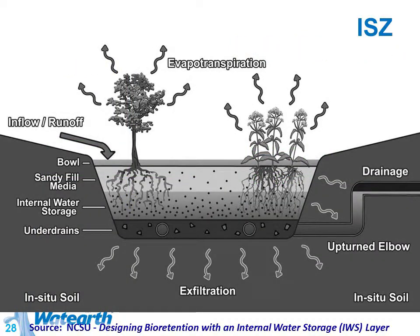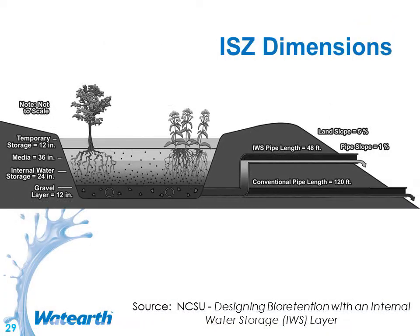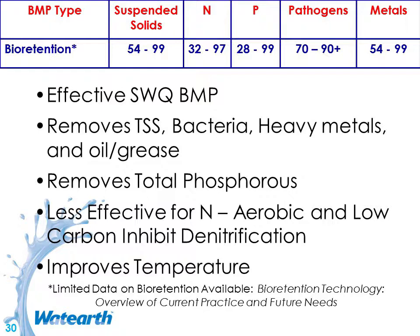These slides cover internal storage zones, which is a design modification to force more storage in bioretention systems that have underdrains. It requires certain depths, specifically some anaerobic conditions for denitrification, but it can help with nitrate removal potential. We do see good water quality performance from bioretention for total suspended solids, metals, and pathogenic bacteria. Nutrients can be a little variable depending on underlying soils, what's in the growing media, and the pollutant loads into the system.